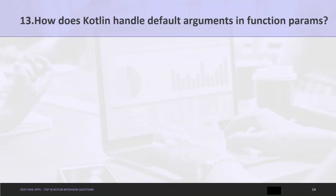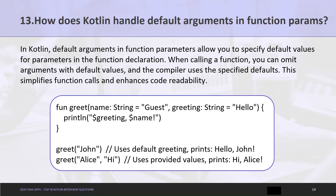Question 13: How does Kotlin handle default arguments in function parameters? In Kotlin, default arguments allow you to specify default values for parameters in the function declaration. When calling a function, you can omit arguments that have default values, and the compiler uses the specified defaults. This simplifies function calls and enhances code readability.